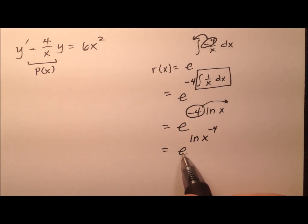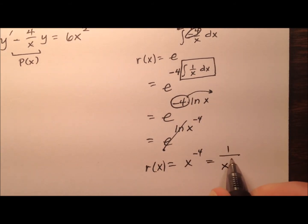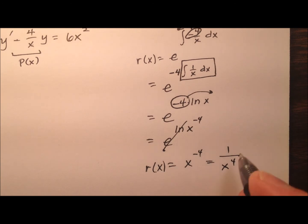And one more step, the e and the natural log are inverses of one another. So when they cancel each other out, I'm just left with x to the negative 4th, or 1 over x to the positive 4. And this will be my integrating factor.